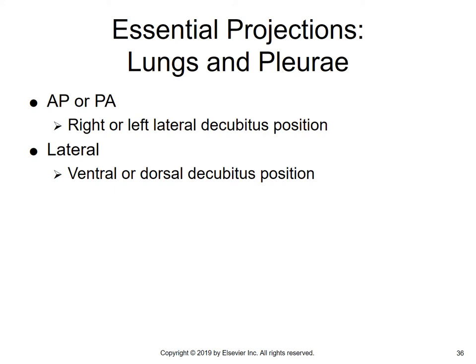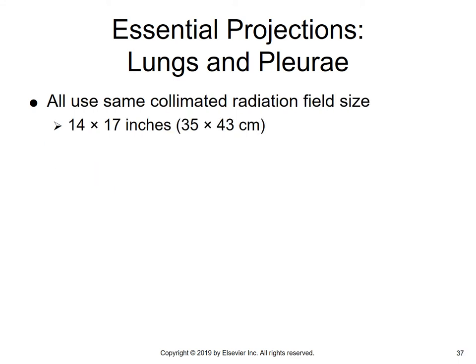Lungs and pleurae can be imaged in AP or PA, right and left lateral decubitus position, and lateral ventral or dorsal decubitus position. Decubiti are special projections generally done on patients who are very ill — they've got fluid in their lungs, and the doctor wants to see how much fluid. We do a decubitus to level it off. The same collimated radiation field, 14 by 17, is used.